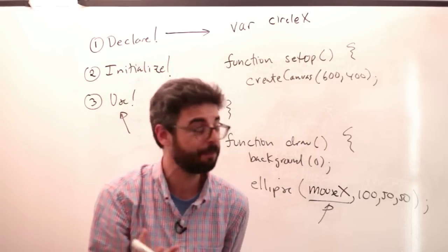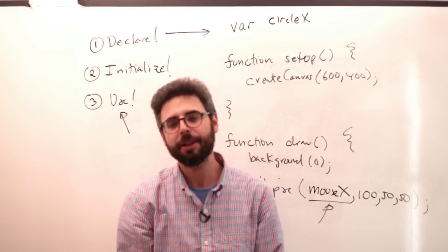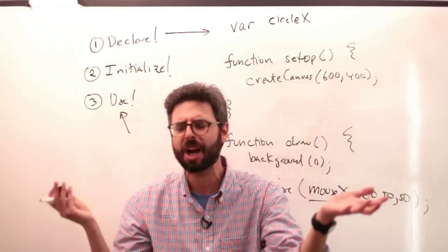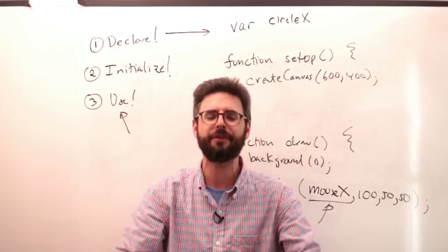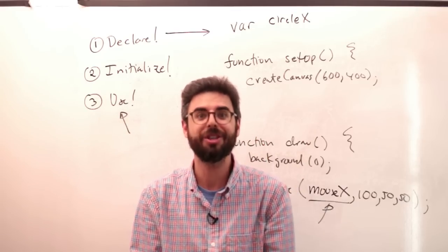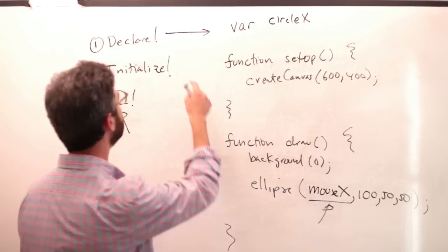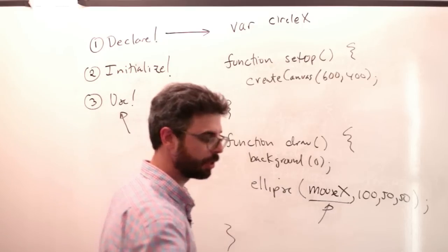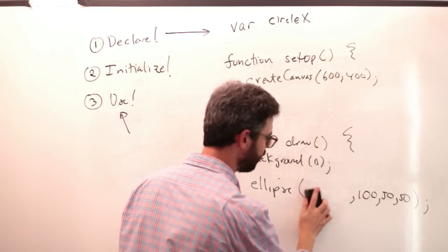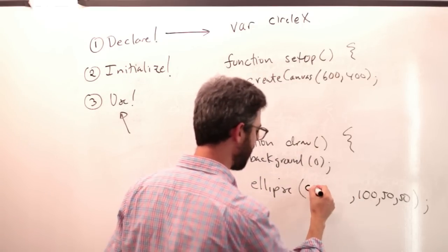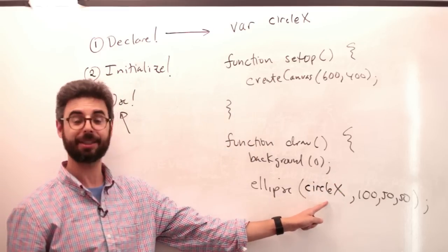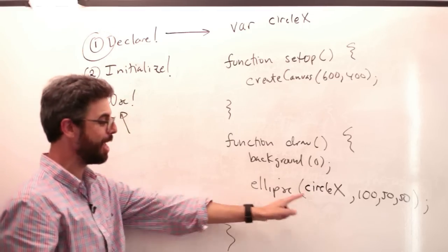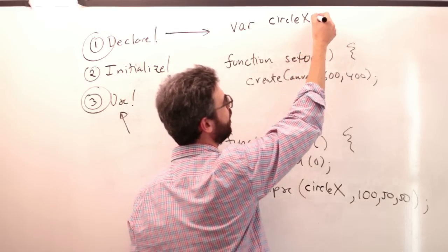I'm just going to use the word circleX - you could even just name it X. There are a bunch of rules, like you can't start a variable name with a number and you can't use strange characters. But you'll sort of figure that out through trial and error. Mostly you just want to use words and you can't have any spaces. So declaring means writing VAR and the name. I could say circleX instead of mouseX - that's using it. So I've done step one and step three, but I need a semicolon here.